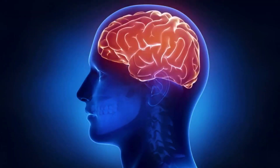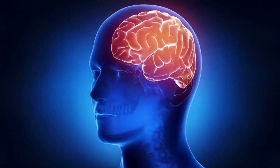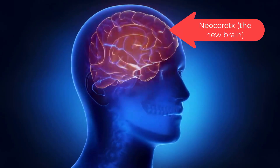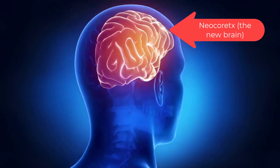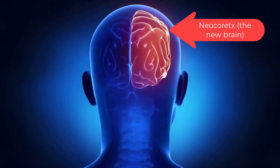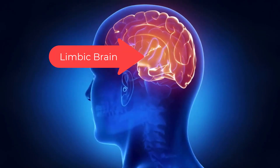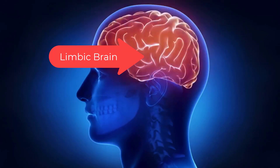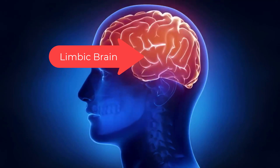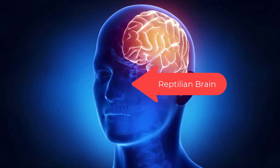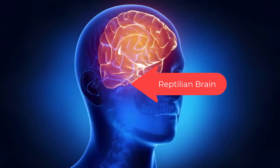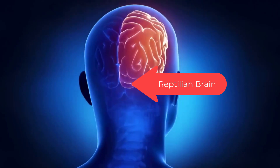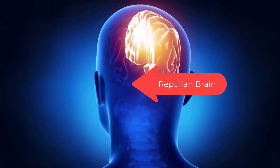Your brain has three basic layers and only one real decision maker. The new brain, the neocortex — it thinks and processes rational data. The middle brain, the limbic brain — it feels emotions and is our instinct for fight or flight response.